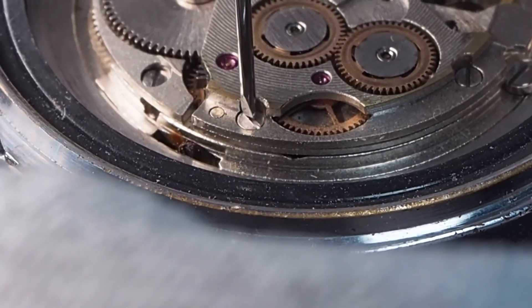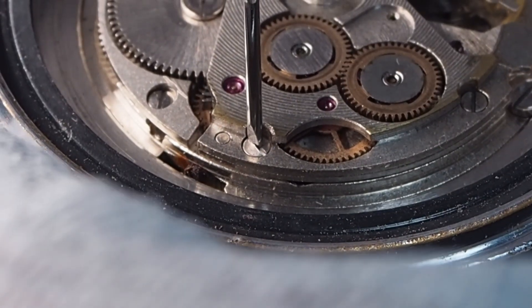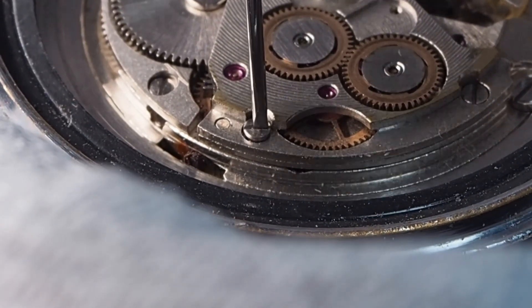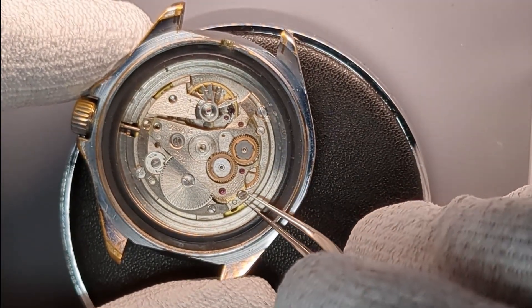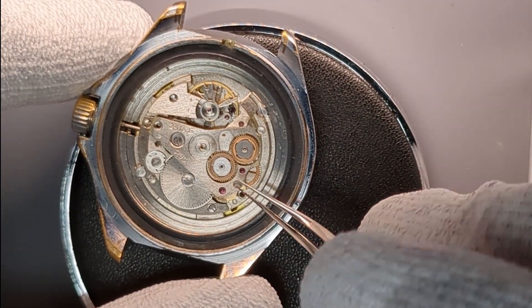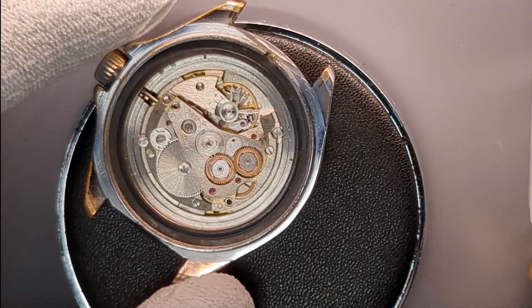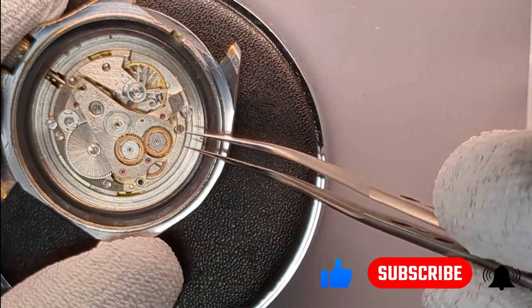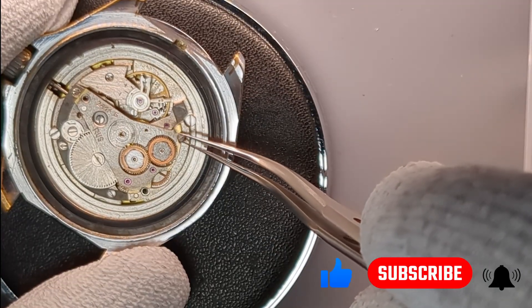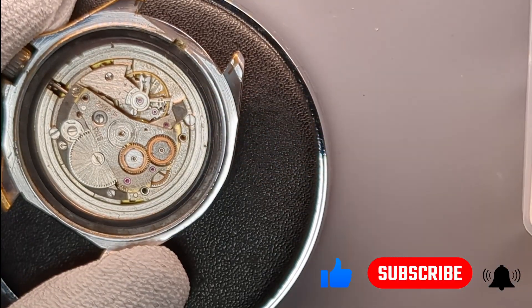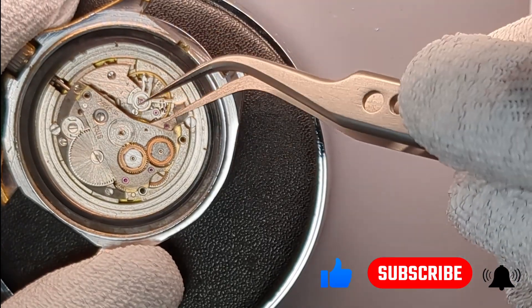The automatic winding system in the Vostok is quite different from Swiss designs. Instead of complex reverse wheel setup, it uses two simple intermediate wheels with a spring, which allows the rotor to wind the main spring in both directions. It's not the most efficient system, but extremely reliable and easy to service. This simple approach is typical of Vostok engineering.